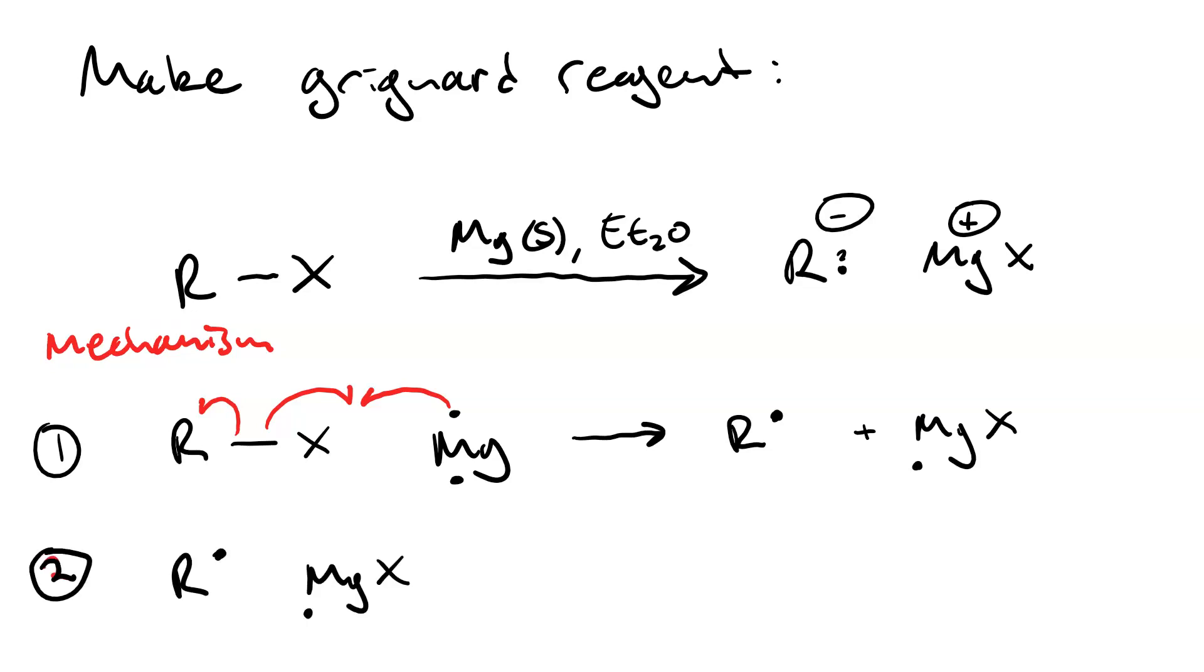The second step involves coupling of the alkyl radical and the magnesium halide radical that were created in the first step.